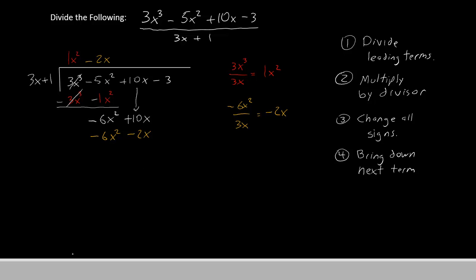Move to step 3. Let's change all of our signs here and do the operations. Negative 6x squared plus 6x squared cancels out. 10x plus 2x gives us a total of 12x.